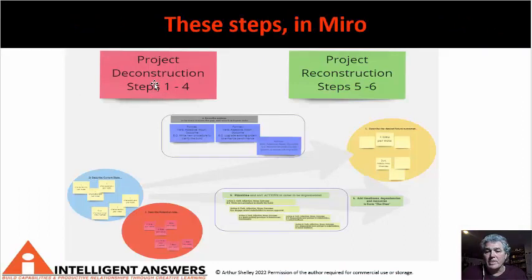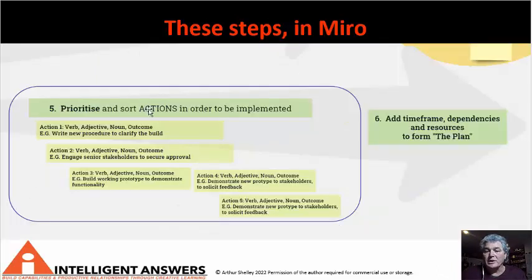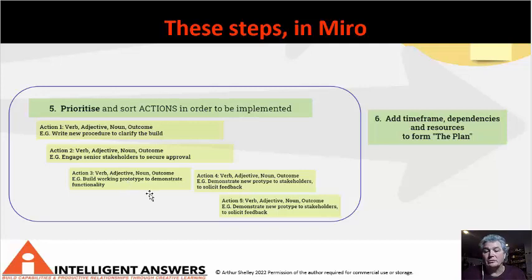So what that looks like in Miro — we did the last video around the deconstruction, we're now talking about steps five and six. We prioritize and sort the actions in order to be implemented. We take these series of actions, we say when they're going to happen, how, and the timing — what can happen in parallel and what needs to happen in series, that is one after the other. You can see it starts to look like a Gantt chart already. We then take those actions and build them into a time frame that actually makes sense and can be delivered with the resources that you've got. That is the plan which gets proposed to the stakeholders in order to secure support to take the next steps.